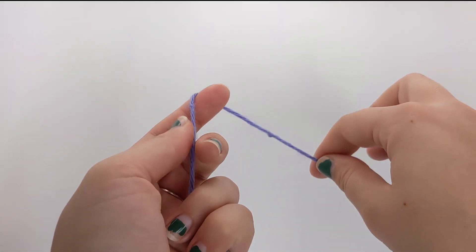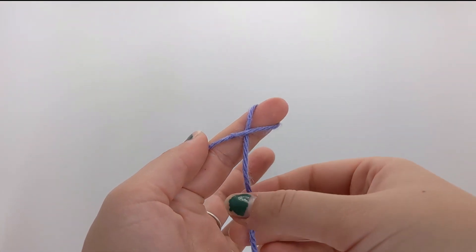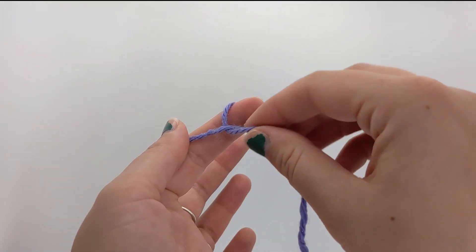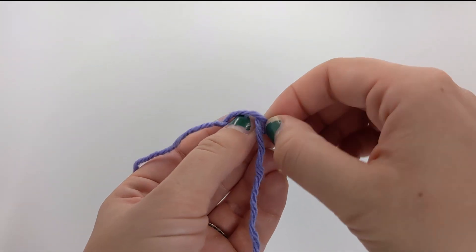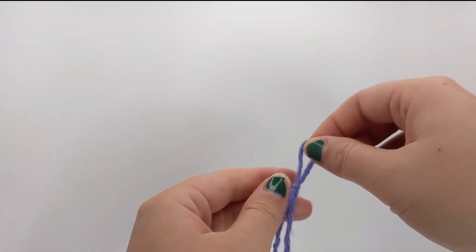I like to do it around the fingers. So you cross in front and then you take that bottom end, the leading strand, and you push it through the loop you just made and pull.